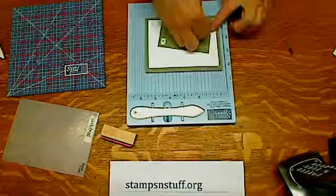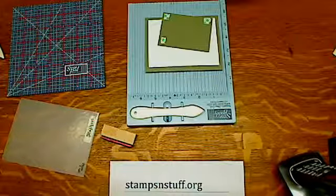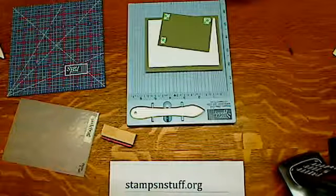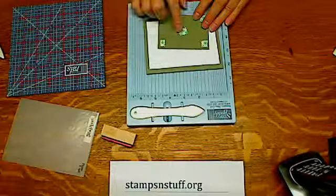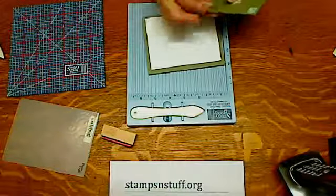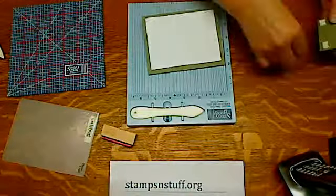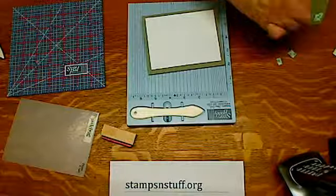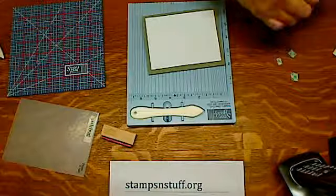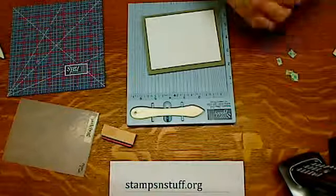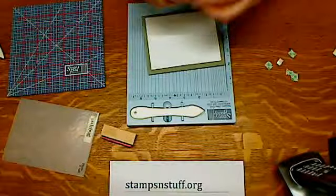So I'm going to put some foam tape. Whenever you pop up an image, you want to put some in the corners, but you also want to put some in the center. Cardstock has a tendency to bow as it sits, and so as your card ages, you don't want it to be bowing.